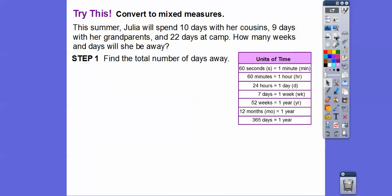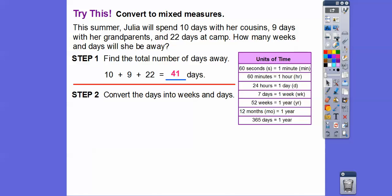Find the total number of days away. We're going to add up all those days, 10 plus 9 plus 22. I like to add these two numbers first. 9 plus 22 is 1 less than 10 plus 22, so it's 31. And then we add that 10, that's going to give us 41. You can add these, 10 plus 9 is 19, 19 plus 22 is also 41.